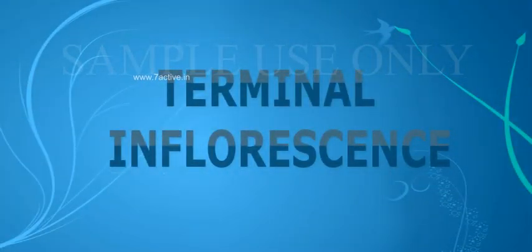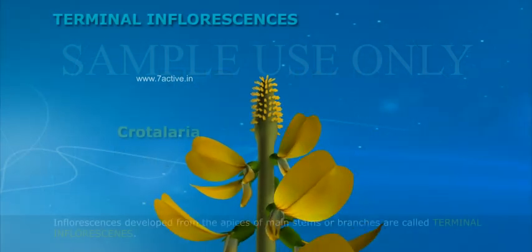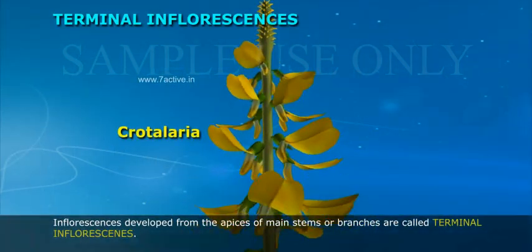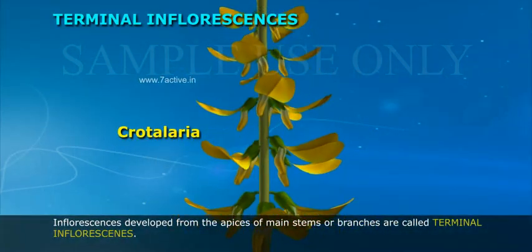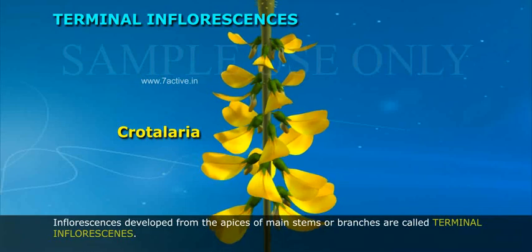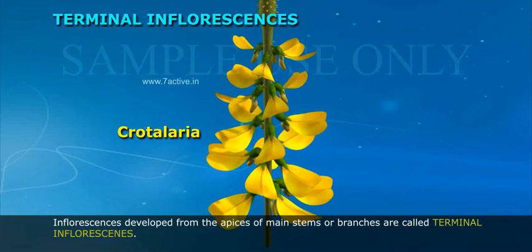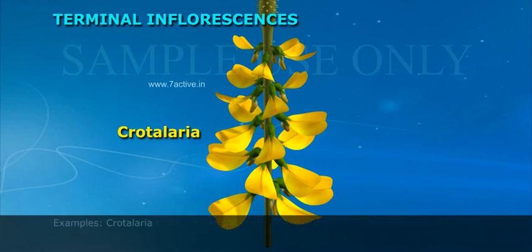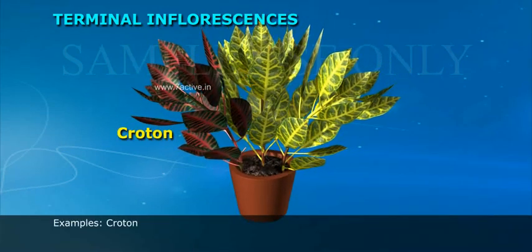Terminal inflorescences: Inflorescences developed from the apices of the main stem or branches are called terminal inflorescences. Examples: Crotalaria, Croton.